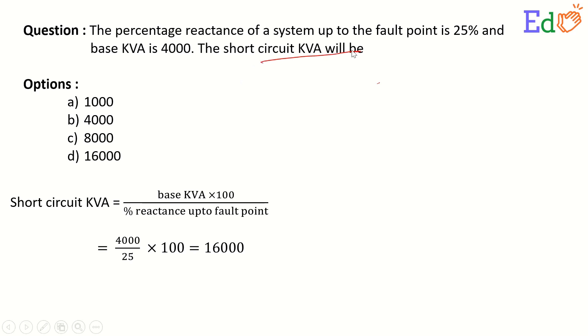there is a formula readily available: base KVA times 100 divided by percentage reactance up to the fault point. As given, 4000 is the base KVA, percentage is 25, and multiplied by 100 it gives 16000.